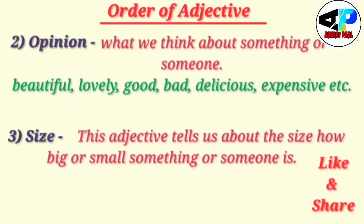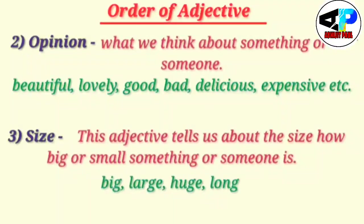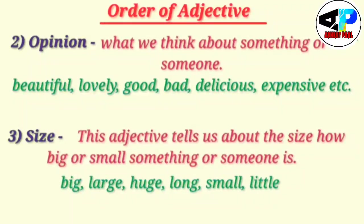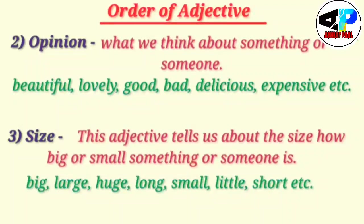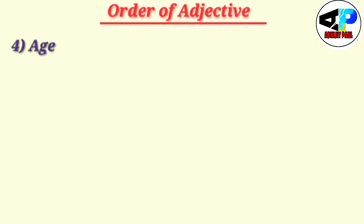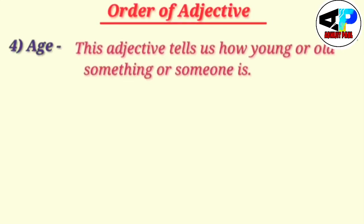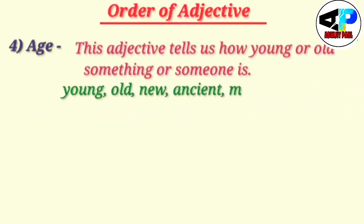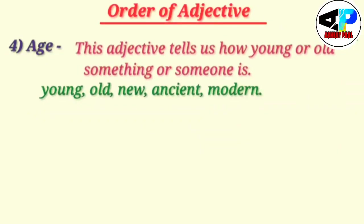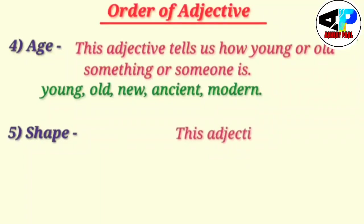The third order will be size. Size tells us how big or small something or someone is. Words like big, large, huge, long, small, little, short — they show size. Our next order will be age. This adjective tells us how young or old something or someone is. Words like young, old, new, ancient, modern — these show age.